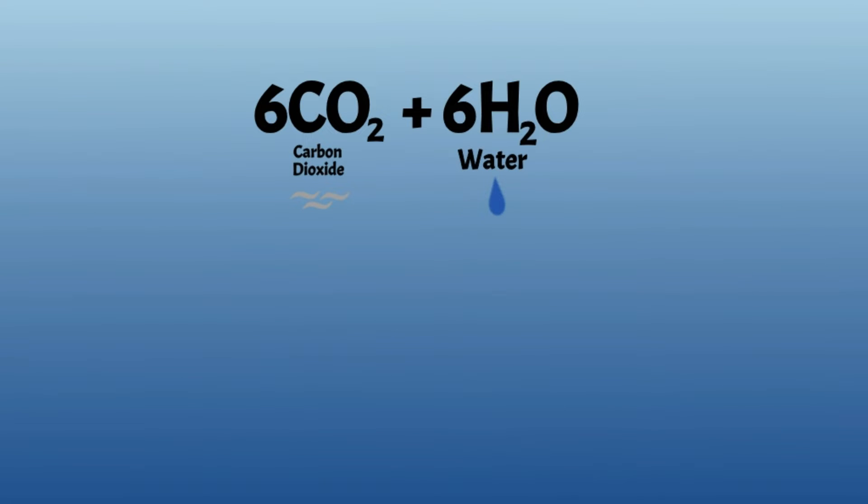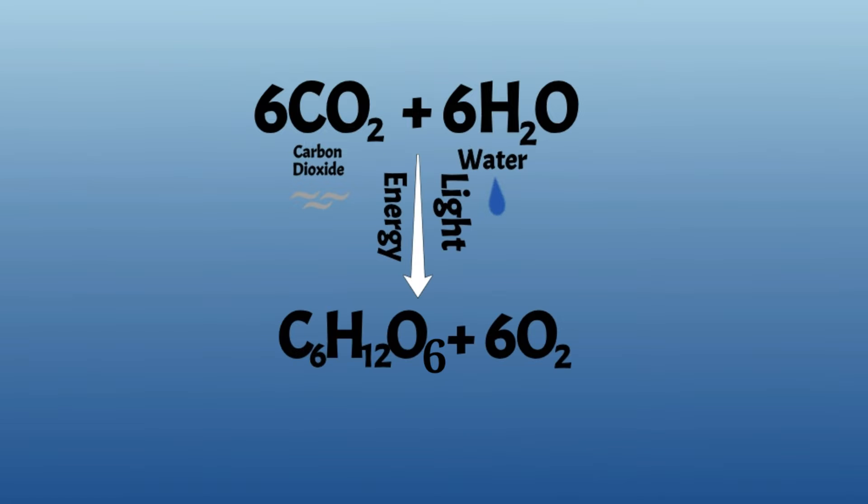The reaction of those three things - carbon dioxide, water, and sunlight - makes C6H12O6 and 6O2. C6H12O6 is glucose, or the food for the plant.